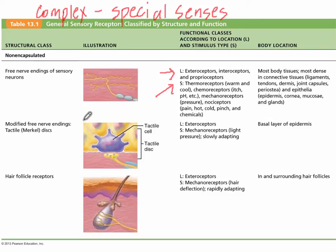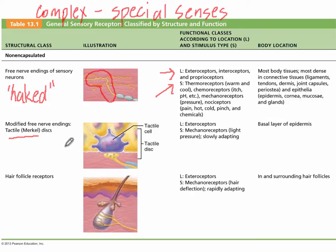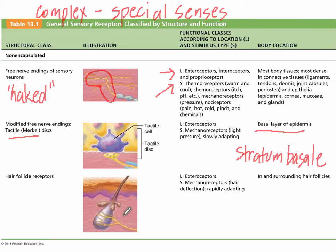The first simple receptor is a naked dendrite, meaning it has no tissue surrounding it. There are also tactile or Merkel discs, located in the basal layer of the epidermis — the deepest layer. There are also hair follicle receptors, nerve receptors located around the hair follicle that respond to mechanical stimulation. For example, pulling at someone's hair activates the mechanoreceptors at the base of the hair follicle.